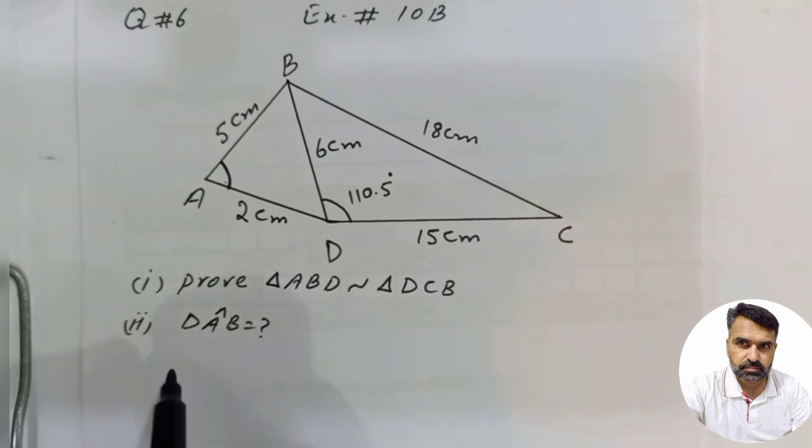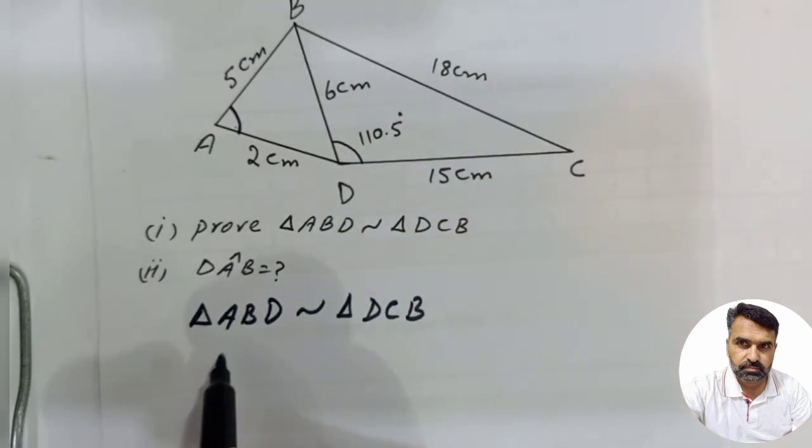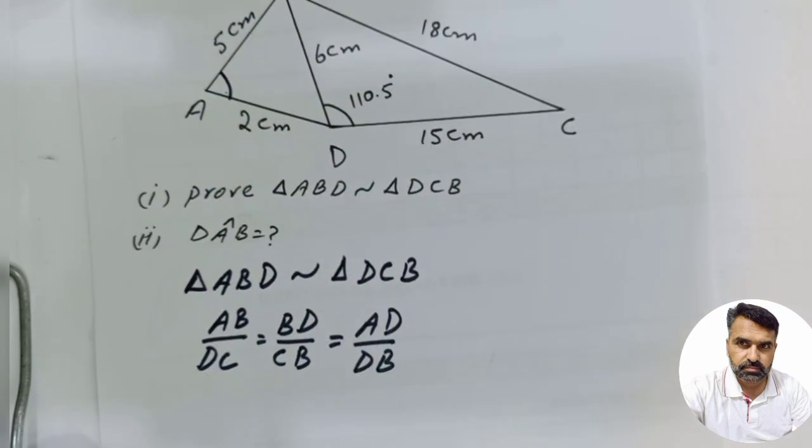We will write triangle ABD. If triangle ABD is similar to triangle DCB, then their corresponding sides are proportional. So corresponding sides are: AB over DC is equal to BD over CB, and this is equal to AD over DB.